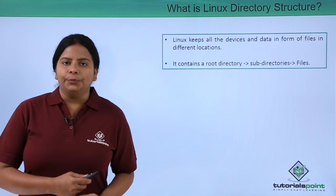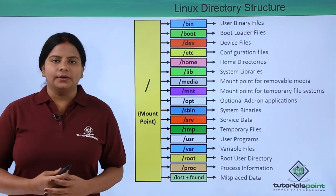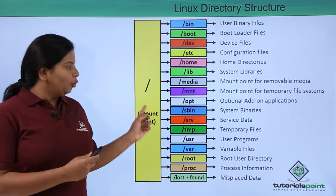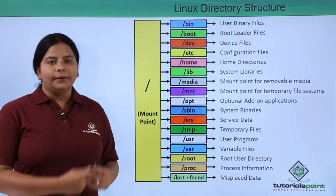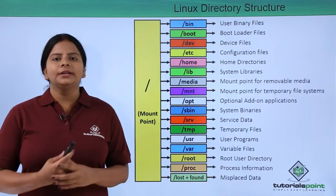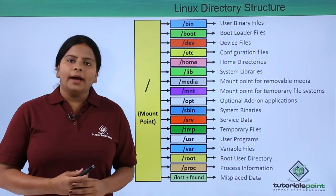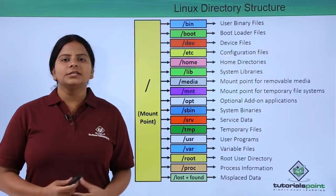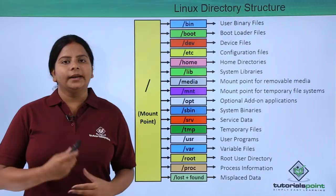The first directory is `/bin`, which stands for binary files. Whatever commands you are going to use — like creating a user, creating a file, creating a directory — everything will be stored into `/bin`. All these directories are created under the mount point, which is the forward slash. When you run a command, these binary files get executed and provide you the output.